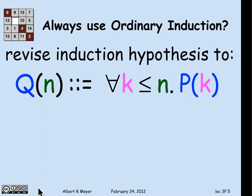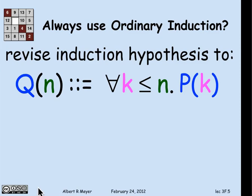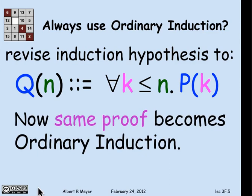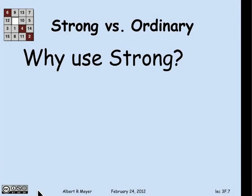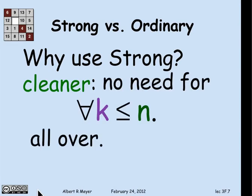Just revising the induction hypothesis to include that universal quantifier 'for all k less than or equal to n' means that the strong induction on P(k) becomes an ordinary induction on Q(n). With a trivial change — decorating a bunch of occurrences of formulas with 'for all's' — we have converted a strong induction into an ordinary induction. So strong induction adds no power beyond ordinary induction; it just lets you omit a bunch of universal quantifiers. Then why use strong? Just precisely because it's cleaner — you don't have to write those 'for all k less than or equal to n's' all over.